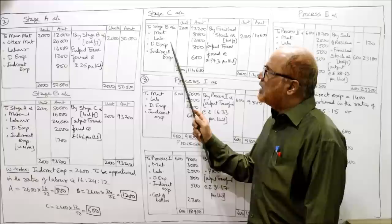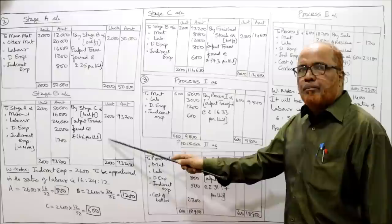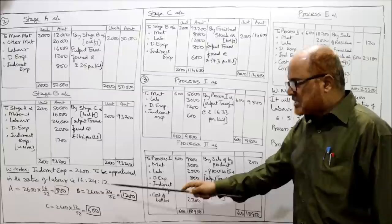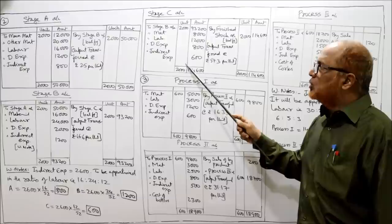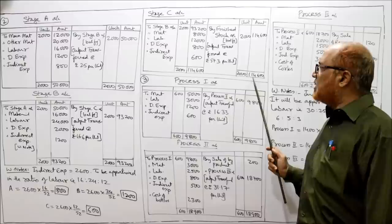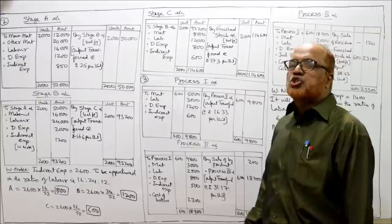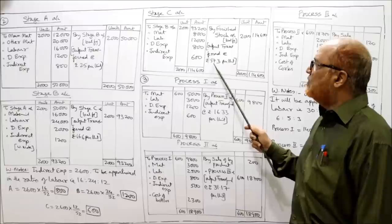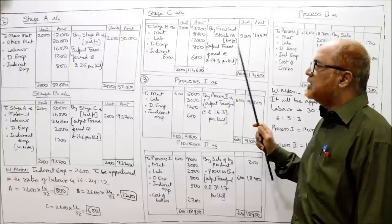Stage C account — debit side: to Stage B account 2,000 units, 93,200 rupees; to material 8,000; to labour 12,000; to direct expense 800; to indirect expense 600. Total debit side = 1,14,600 rupees for 2,000 units. Since there are only three stages, output goes to finished stock account. By finished stock account balancing figure: 2,000 units, 1,14,600 rupees. Output transferred at 1,14,600 / 2,000 = 57.3 rupees per unit. This completes Problem 2.